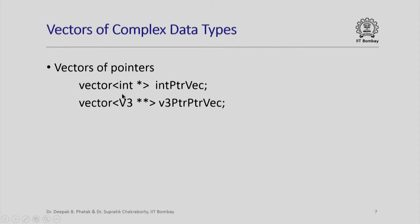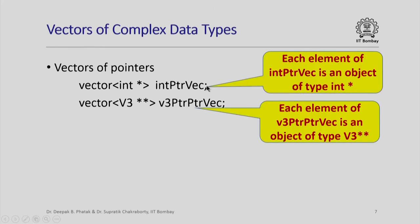We could also have vectors of pointers, because pointers are legitimate types. For example, int_pointer_vec is a vector where each element is an integer pointer. We could also have a vector V3_pointer_pointer_vec where each element is of type V3** — a pointer to a pointer to V3. When we declare vectors without specifying their sizes, the vector object is created with default size 0, so both of these are vectors of size 0.